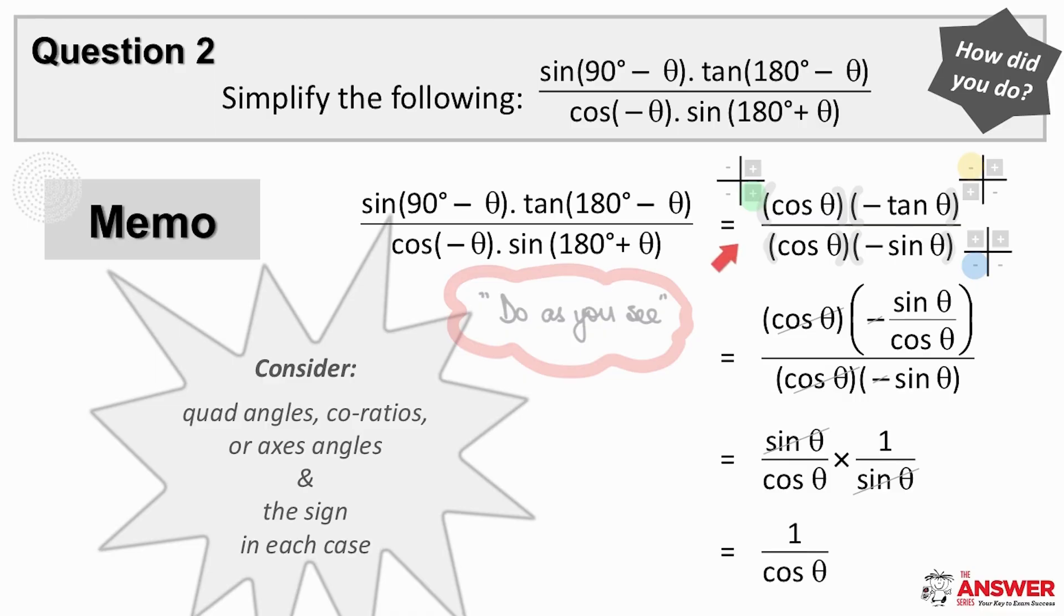In order to simplify here, apply the tan identity and then simplify slowly but surely, making sure to be careful with the signs.